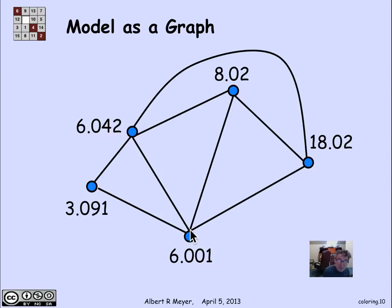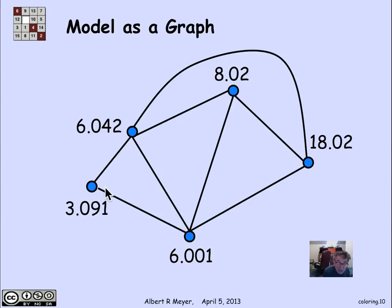Here we've drawn a graph with sample subjects. 6042 and 1802 have a student in common — that edge means they need final exams at different times. Likewise, 802 and 6042 have a student in common and need different time slots. On the other hand, 3091 and 1802 have no edge between them, which means they can be scheduled at the same time — no student is taking both 3091 and 1802, at least according to this graph.